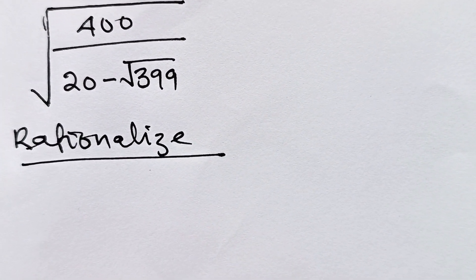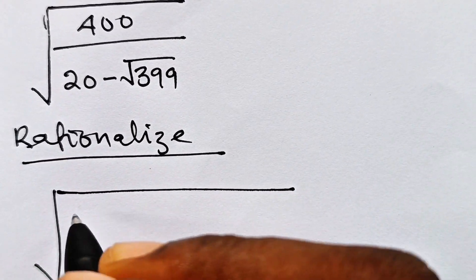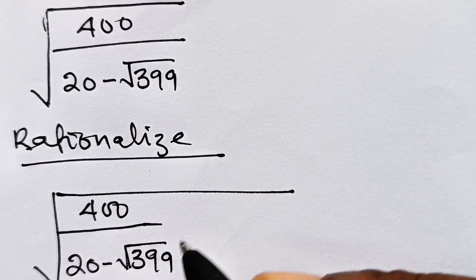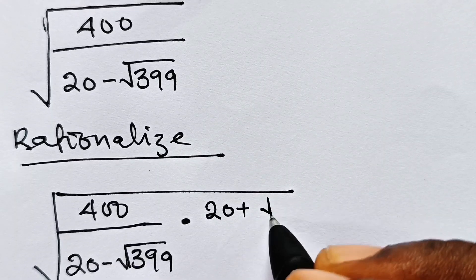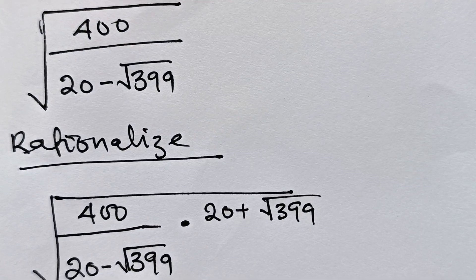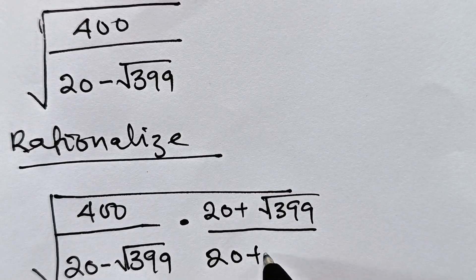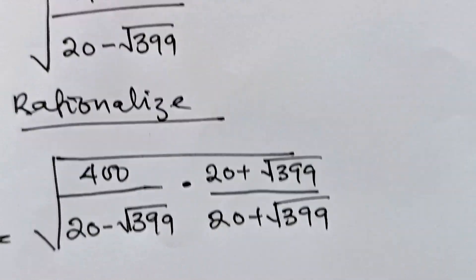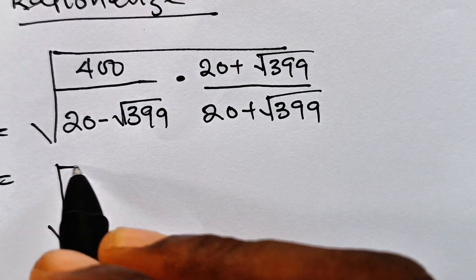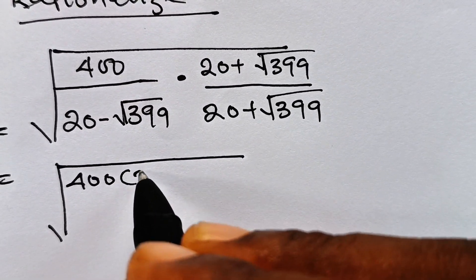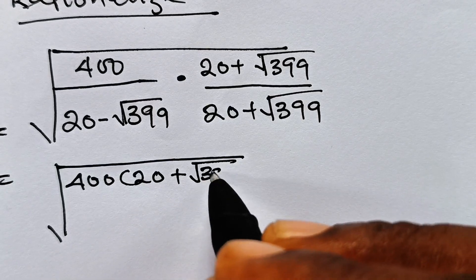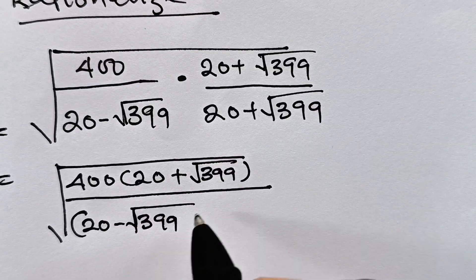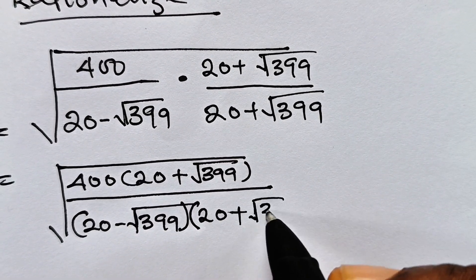To do that, we will have the square root of 400 divided by 20 minus square root of 399, multiplied by 20 plus root 399 divided by 20 plus square root of 399. So this is equal to the square root of 400 multiplied by 20 plus root 399, divided by 20 minus root 399 multiplied by 20 plus root 399.